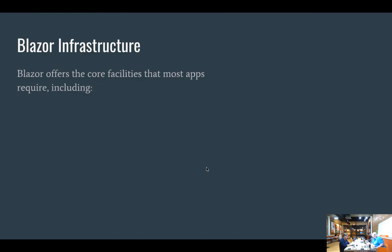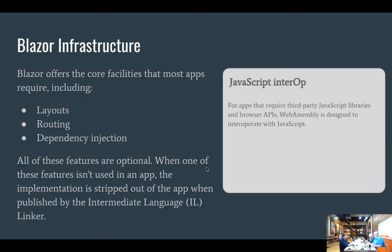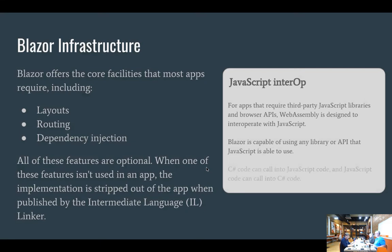Blazor infrastructure offers core facilities that most apps require. Similar to JavaScript frameworks, you get layouts, routing, and dependency injection. All of these features are optional — if you're not using any of them, the implementation removes them so you get good performance. If you still need to use jQuery or similar, WebAssembly is designed to interoperate with JavaScript, which is actually how it bootstraps the applications.